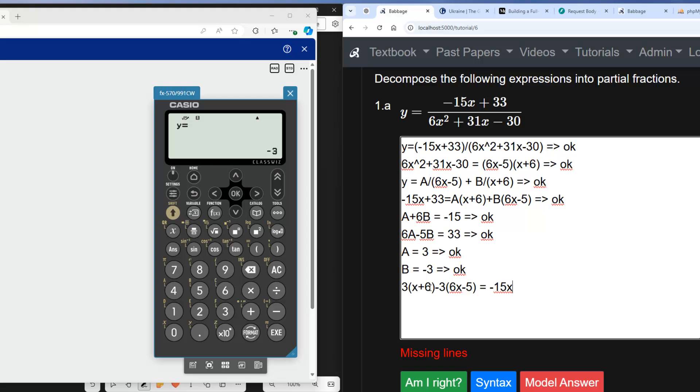-15x + 33, -15x + 33. So we can be confident our values are right. So that's the sanity check equation.